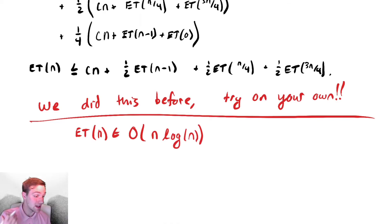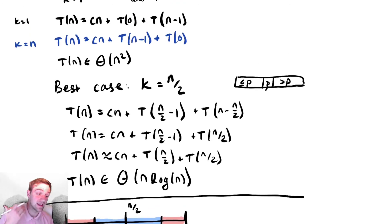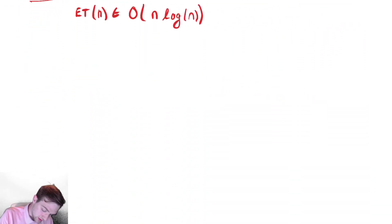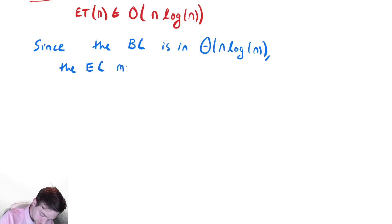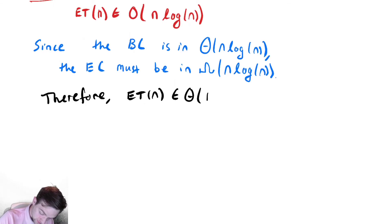Since E[T(n)] is in O(n log n), and from our best case analysis we showed the best case is in Θ(n log n), the expected case must be bounded below by the best case — so E[T(n)] is in Ω(n log n). Therefore, our final conclusion is that E[T(n)] is in Θ(n log n).